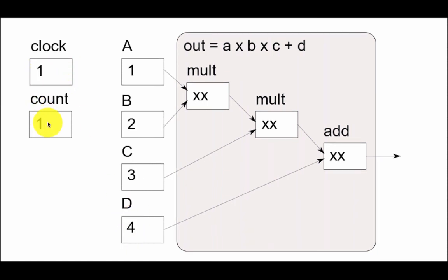As we cycle the clock, the count increases. On the positive edge of the clock, we are registering and working out the multiplication of A and B into here.